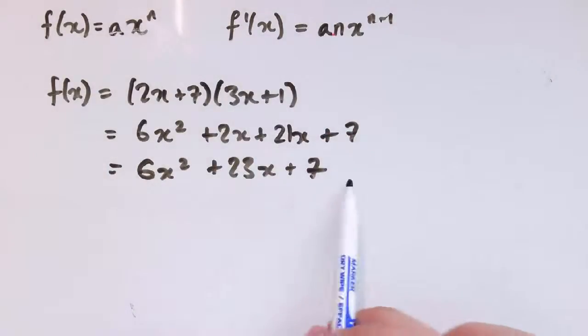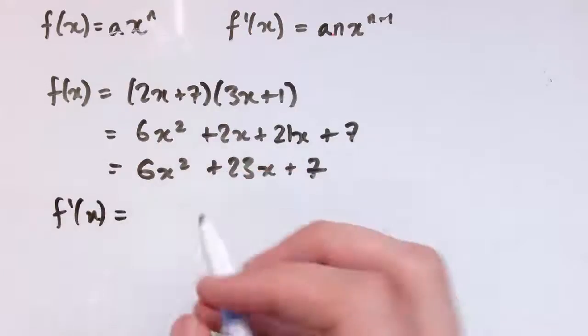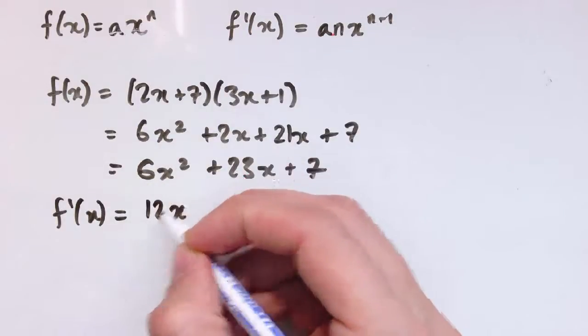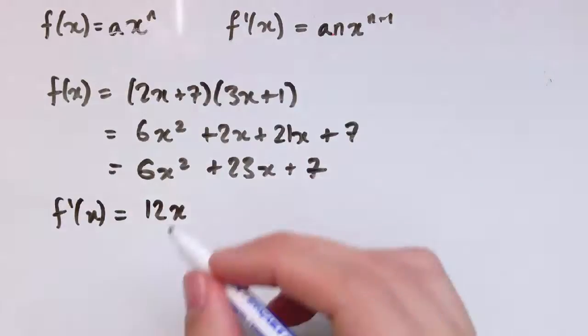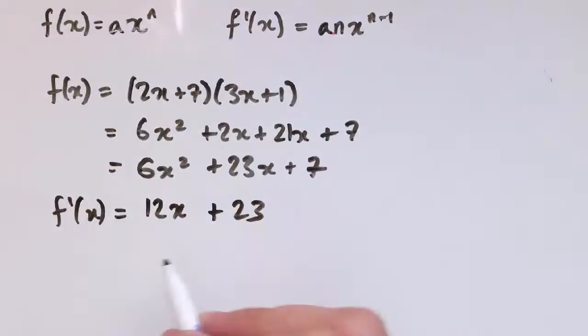Now we've written it as a sum of terms of this form, so we can apply the rule for differentiation and get 2 times 6 is 12x to the 1, which I can just write as 12x, plus 23, and the 7 differentiates to 0. So the answer here is actually 12x plus 23.